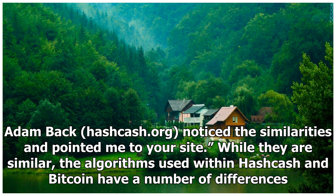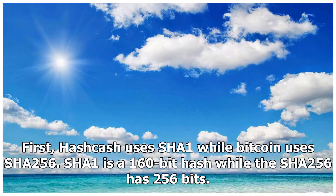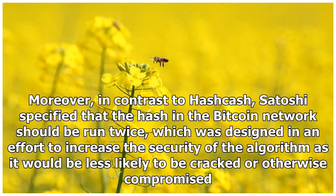While they are similar, the algorithms used within Hashcash and Bitcoin have a number of differences. First, Hashcash uses SHA-1 while Bitcoin uses SHA-256. SHA-1 is a 160-bit hash while SHA-256 has 256 bits. Moreover, in contrast to Hashcash, Satoshi specified that the hash in the Bitcoin network should be run twice, which was designed to increase the security of the algorithm as it would be less likely to be cracked or otherwise compromised.